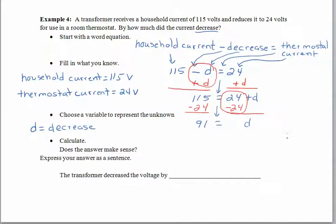Okay, so let's see. 91. 91 what? What is this? The transformer decreased the voltage by 91. And of course those are volts. And then we want to always go back and make sure that our answer makes sense. If we start with these 115 and take away 91, should we be down around the 24 range? Yeah, we should. And so that seems logical.